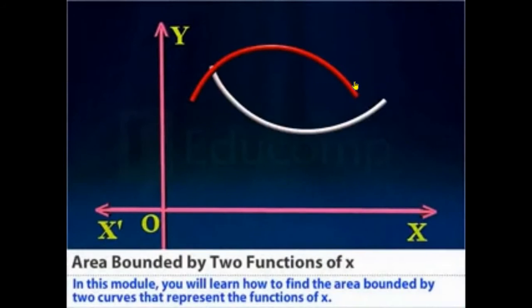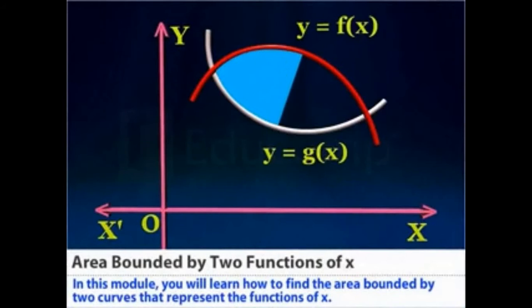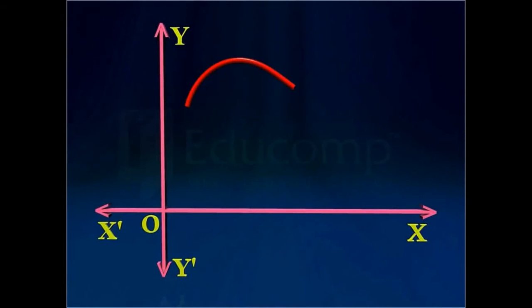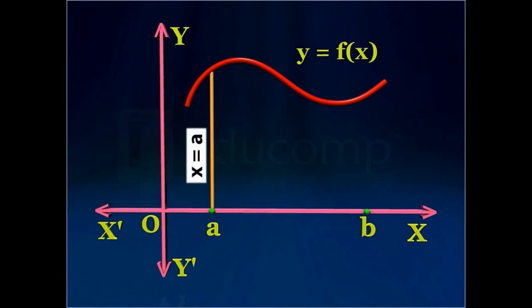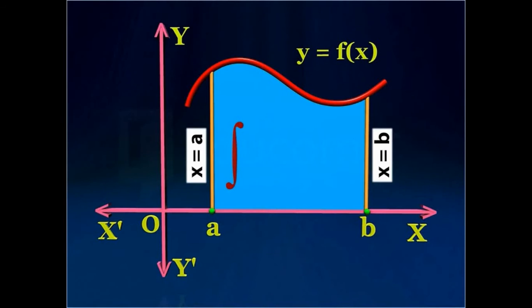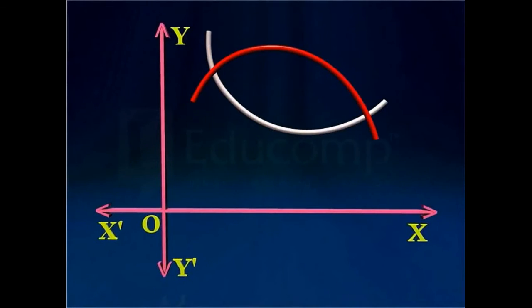In this module you will learn how to find the area bounded by two curves that represent the functions of X. Recall that the area enclosed by the graph of a function y equal to f of X, the vertical lines x equal to a and x equal to b, and the x-axis is a definite integral from a to b of f of x dx.